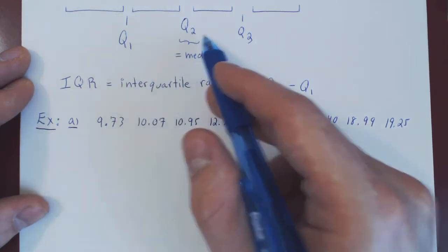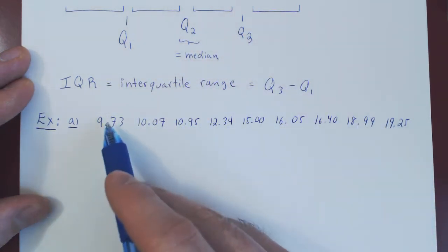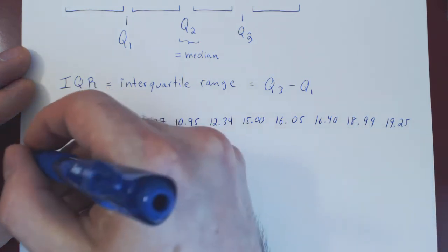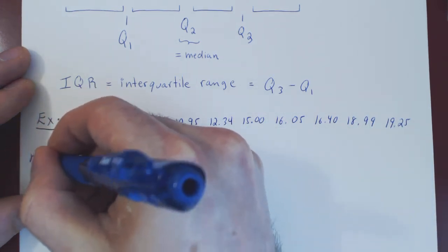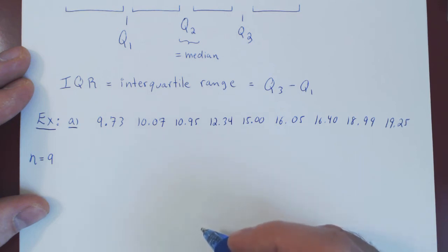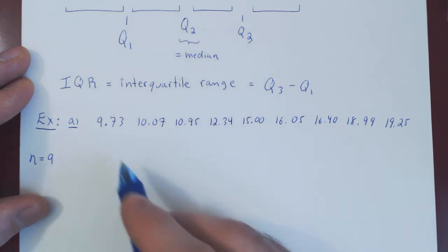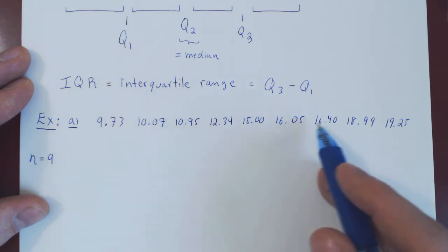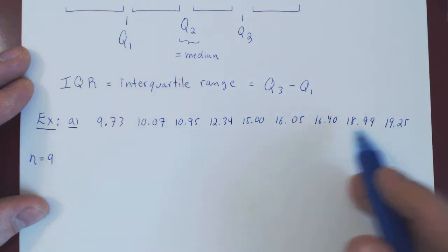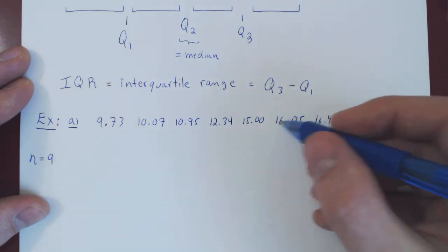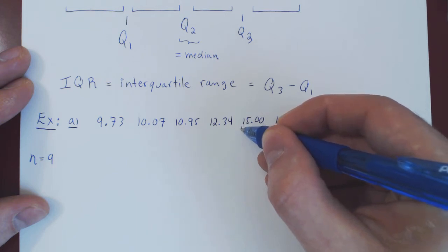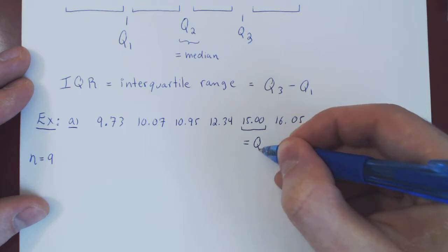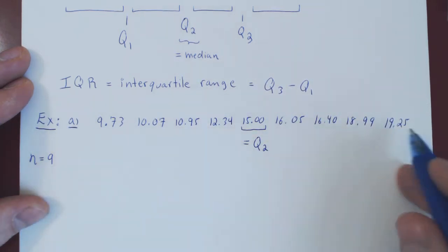We want to find our three quartiles Q1, Q2, and Q3. We have 9 values, so there is a median that is an element of our set. Counting four values on each side, the middle value is $15, and that is Q2 — our second quartile, the median of the entire set.